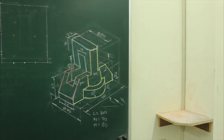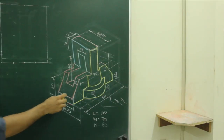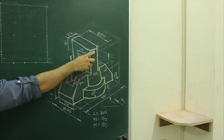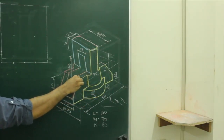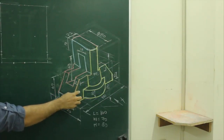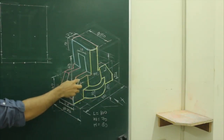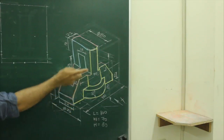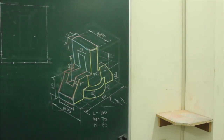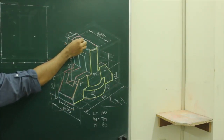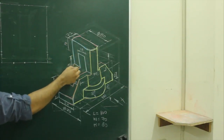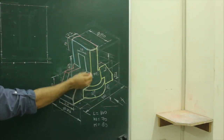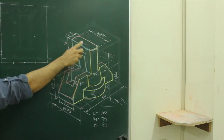In this problem, length is 100, width is 70, and height is 80. Now when you see from the front, you will see this portion as well as this portion, plus you will see this inclined part. We can draw this inclined portion. When you see from the top, you can see this portion, this and this. The circle is in the top view.